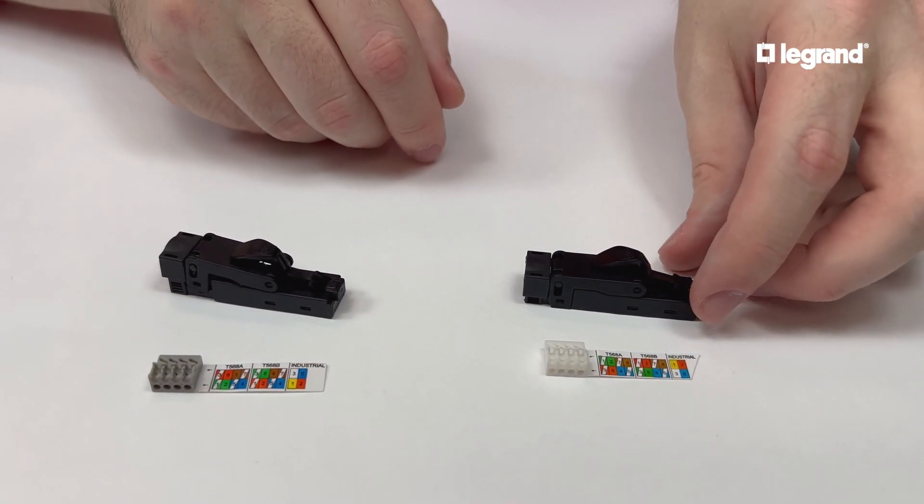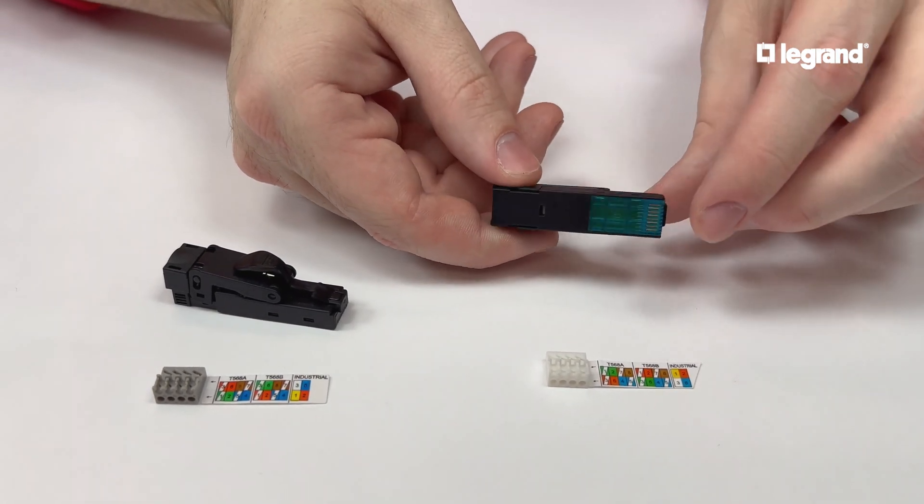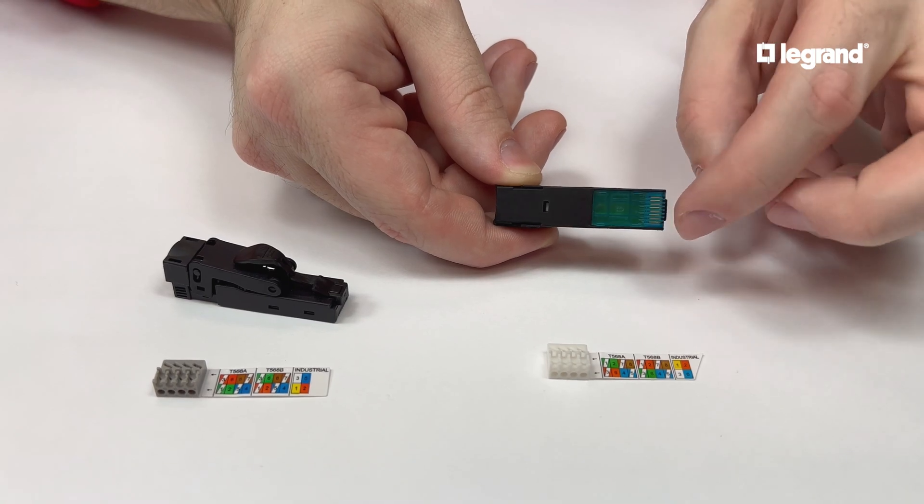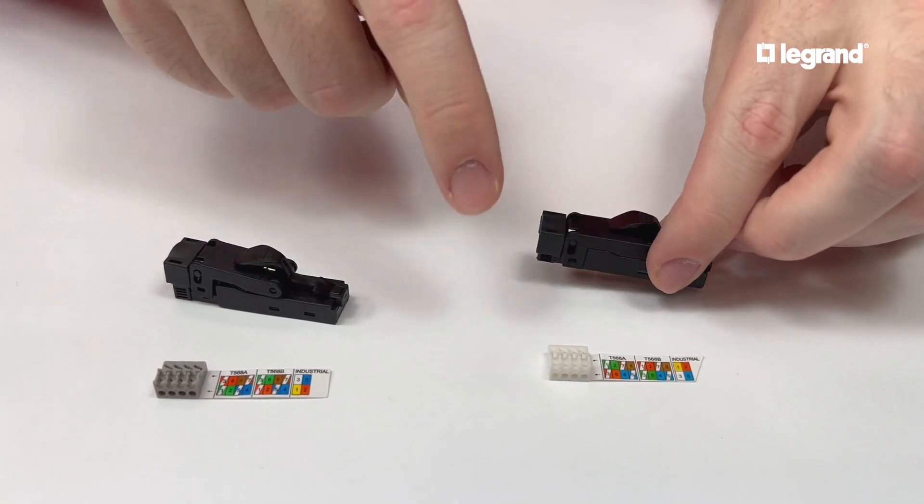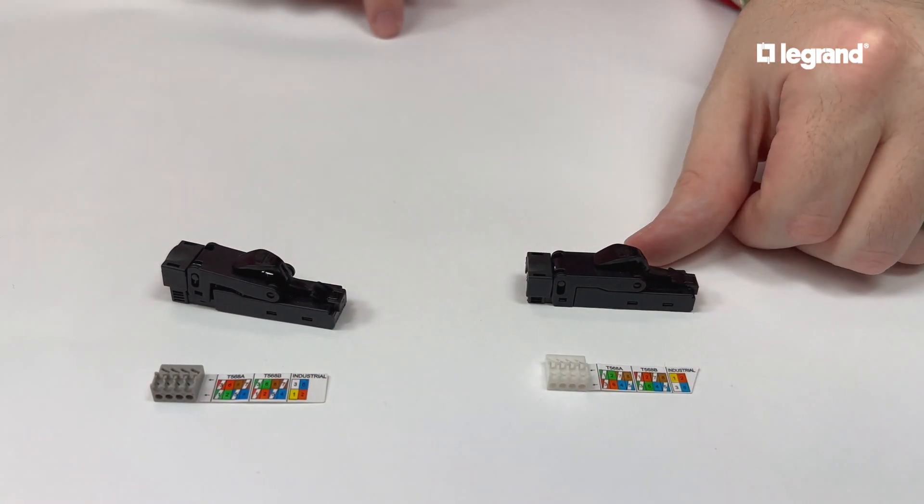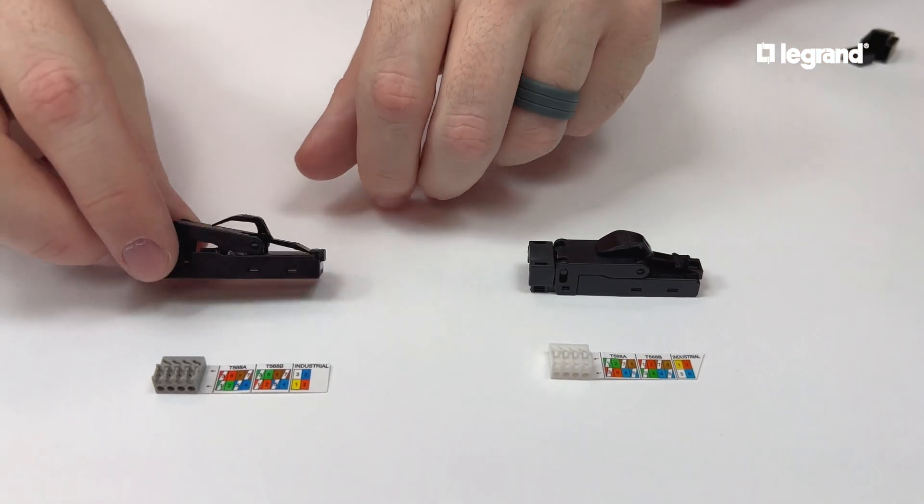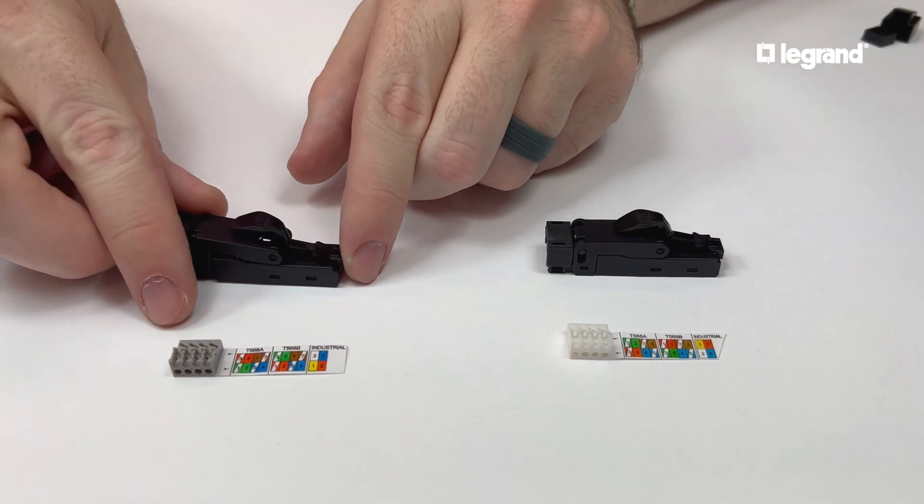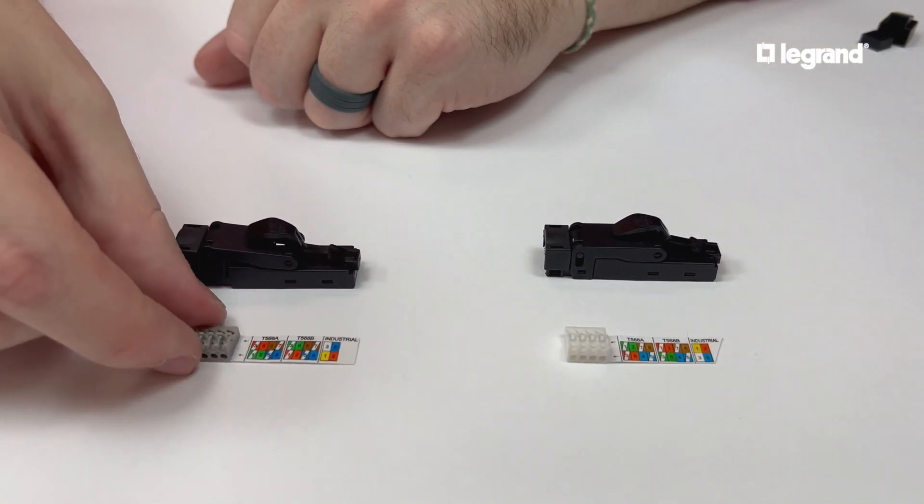Now let's look at how to differentiate the two. The bottom of the Category 6A plug is blue and the wiring cap is white with an angled wiring guide cut, while the Category 6 5E plug is solid black on the bottom and has a gray wiring cap with a straight edge wiring guide. It's important to use the proper cap with the proper category plug.